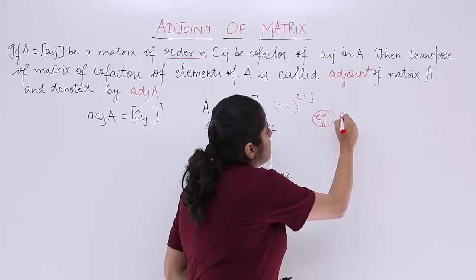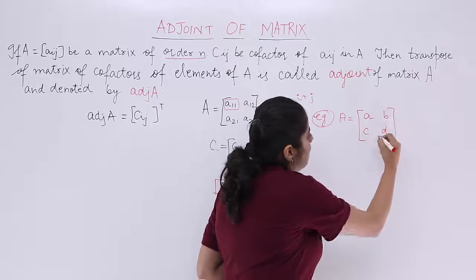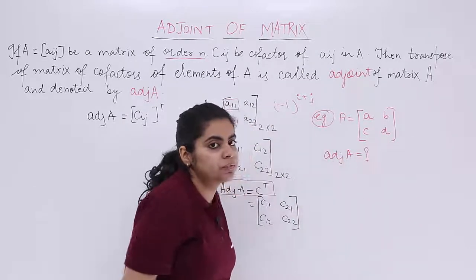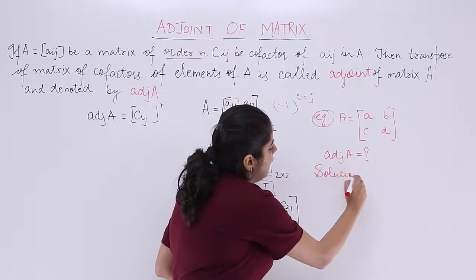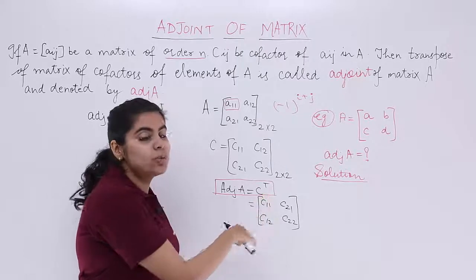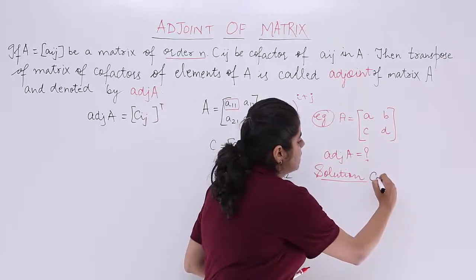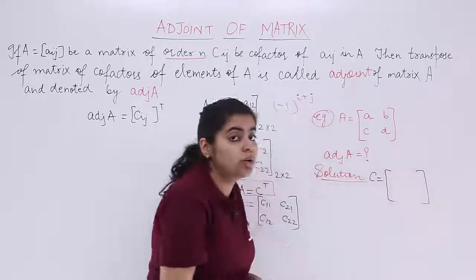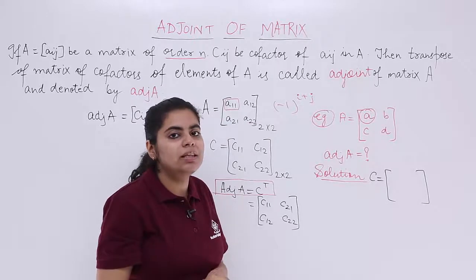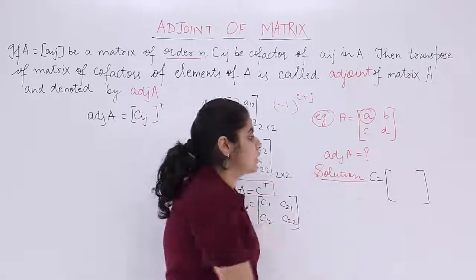Let me take an example to make things more clear. I have a matrix named A with elements A, B, C, D, and I am supposed to find the adjoint of A. My task: I know that adjoint of A equals transpose of the cofactor matrix. So first let's calculate the cofactors. The cofactor of element A — which is position A11 — means leaving the first row and first column, giving D. Since 1 plus 1 equals 2, minus 1 to the power 2 gives plus 1, so the cofactor is positive D.